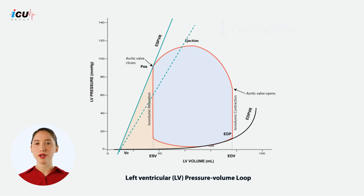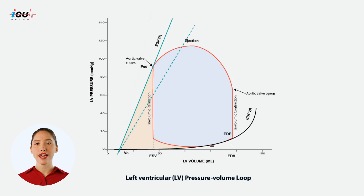The degree at which the slope of the ESPVR has changed can give you information about the overall health of the heart and be used to characterize certain cardiac disease states.